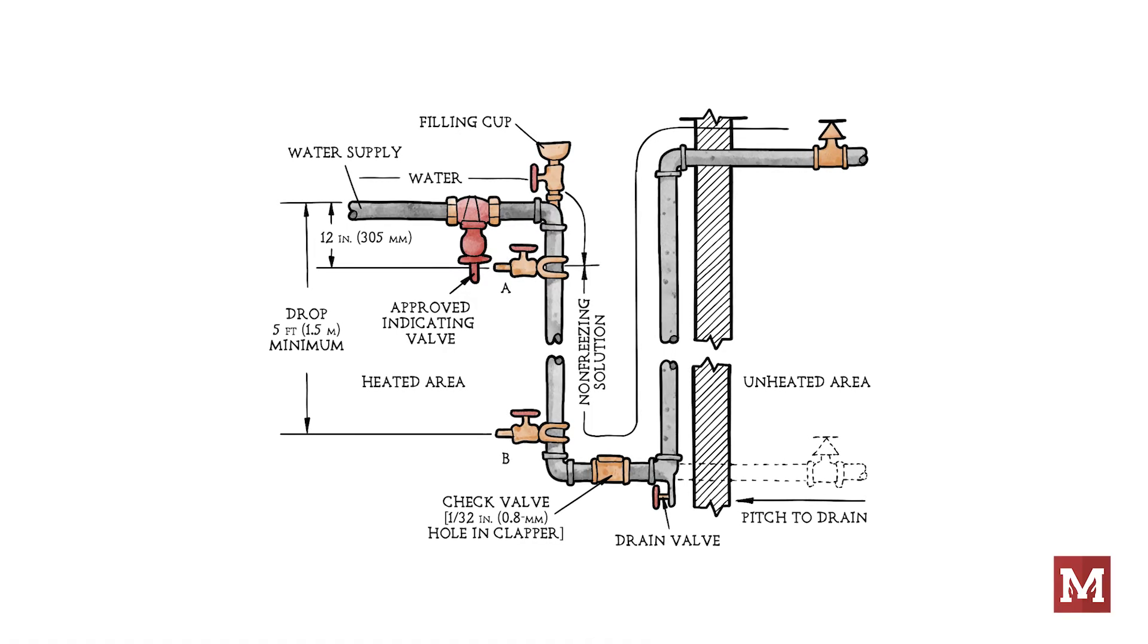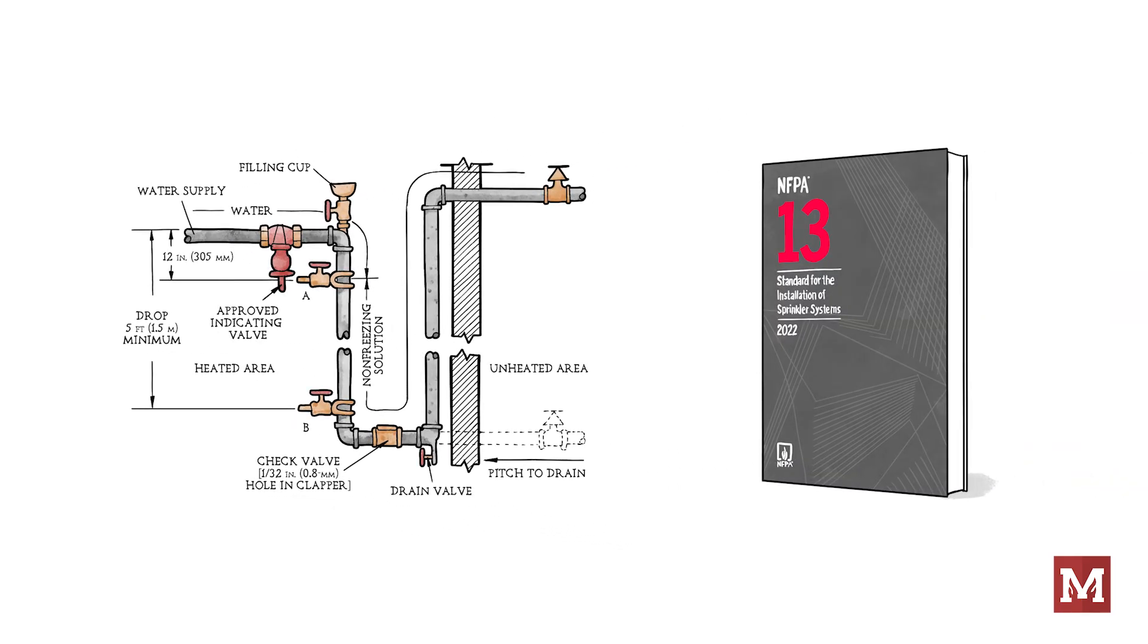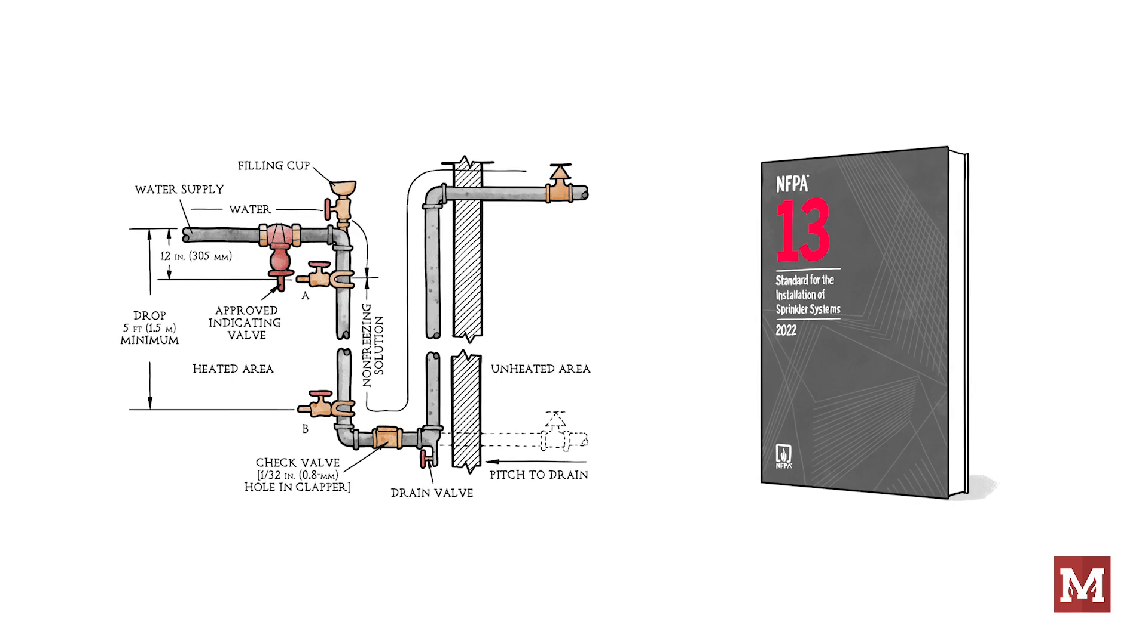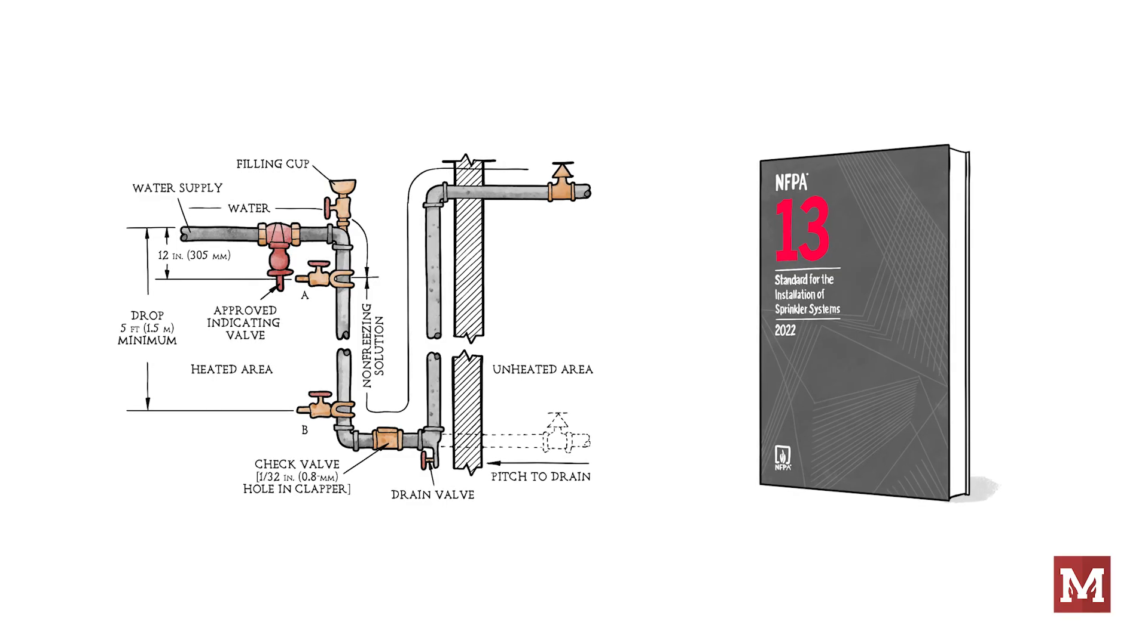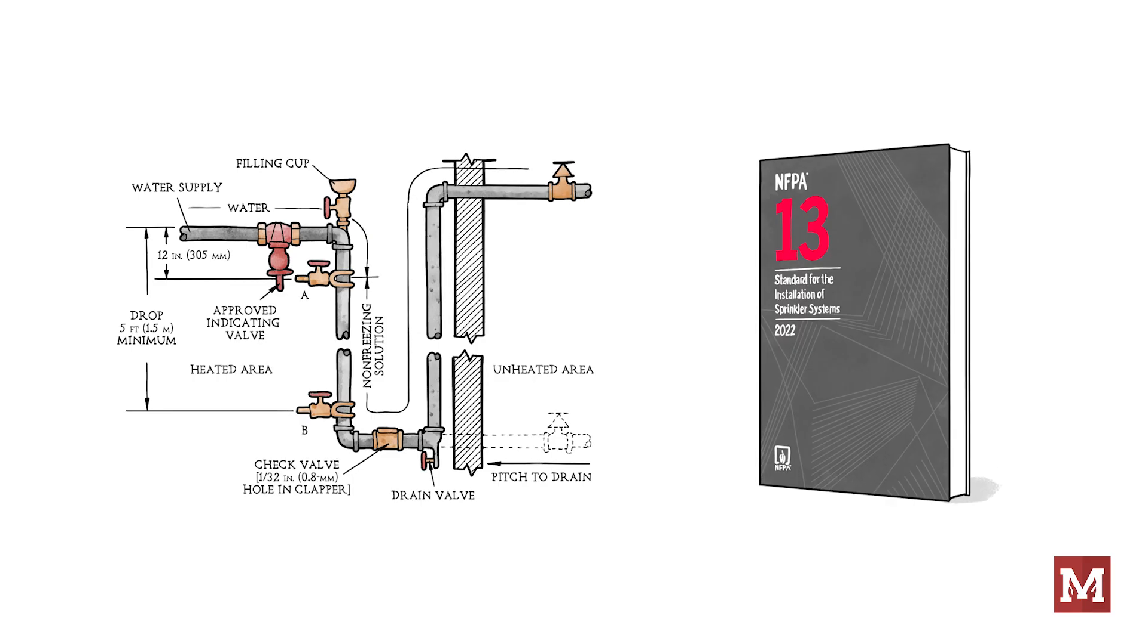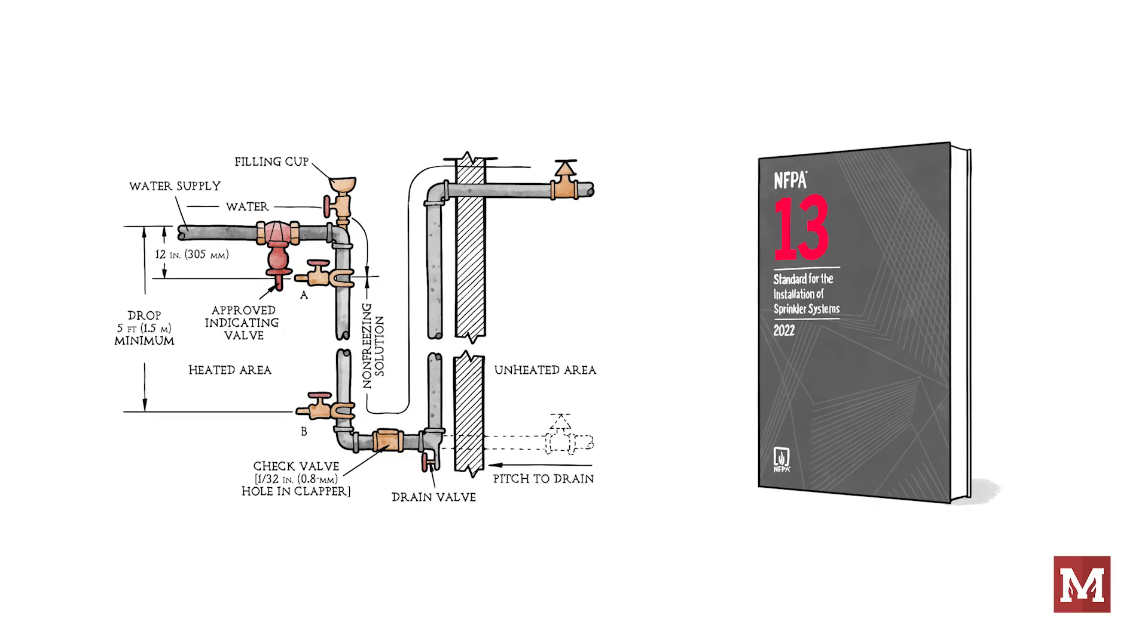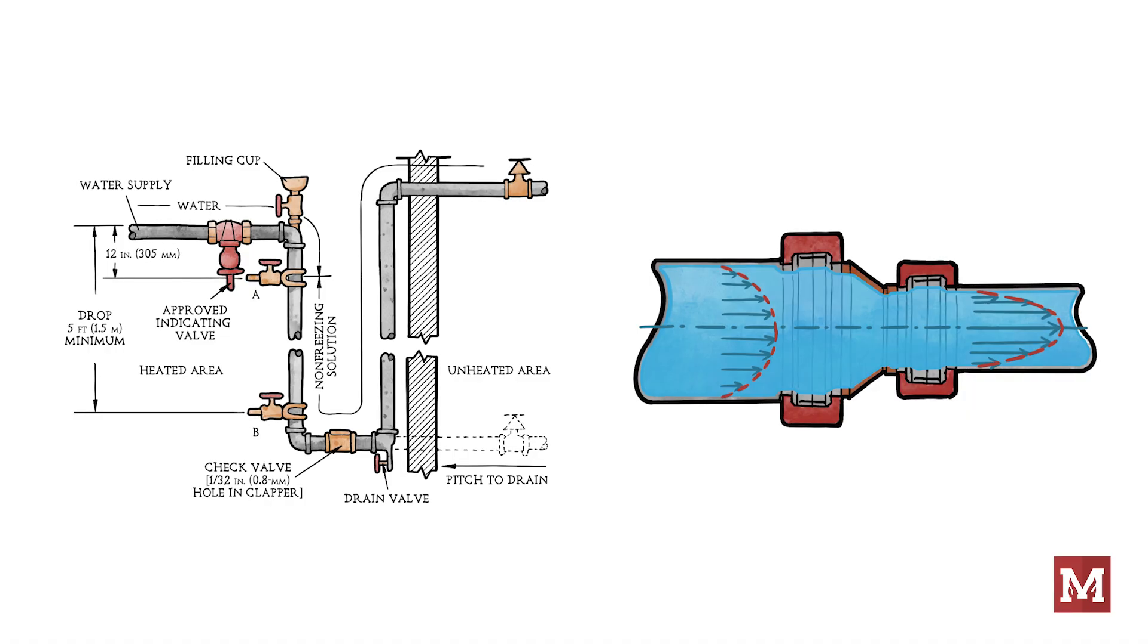For systems that use water only, the standard NFPA 13 does not mandate the use of Darcy-Weisbach because water maintains relatively stable properties—that would be density and viscosity—across temperatures typically encountered in fire protection. This stability means that the effects of turbulence on pressure loss are minor and the simpler calculations using the Hazen-Williams method are often sufficient. But when do I always use the more accurate method?